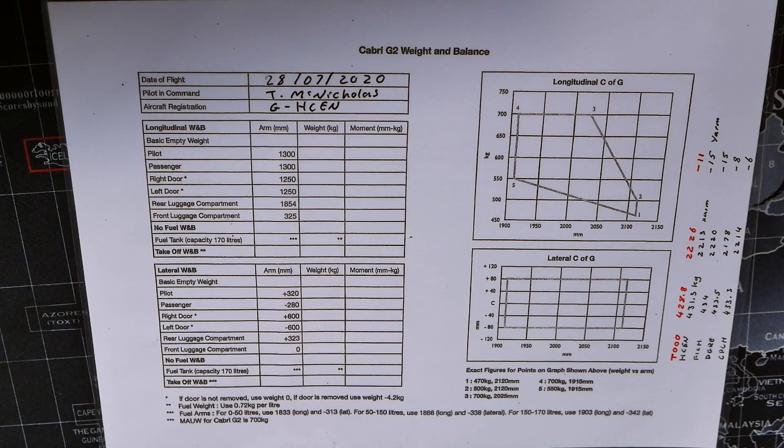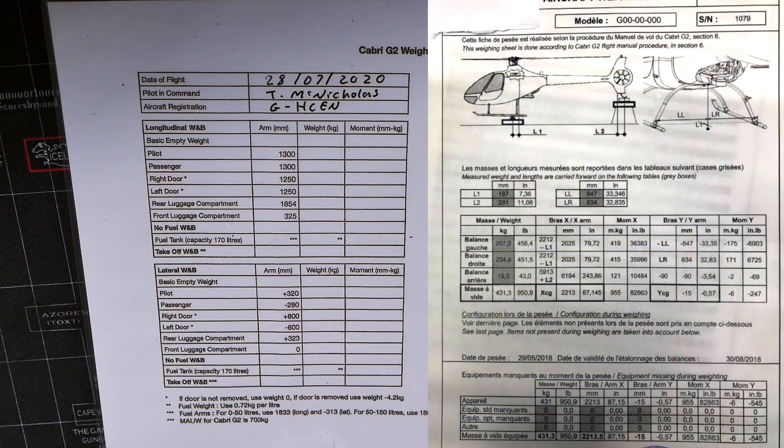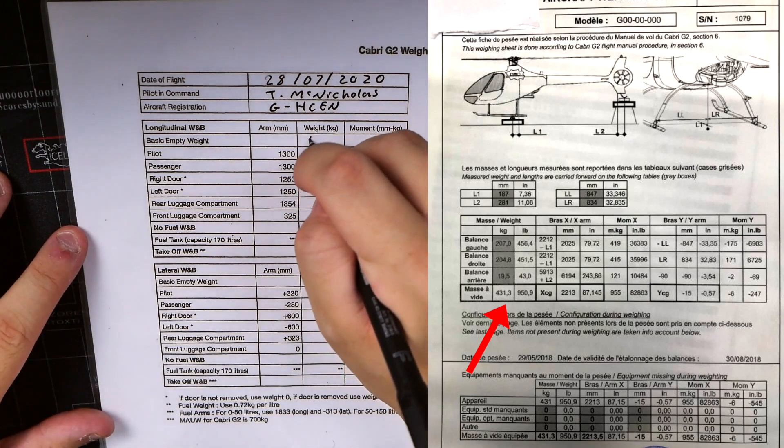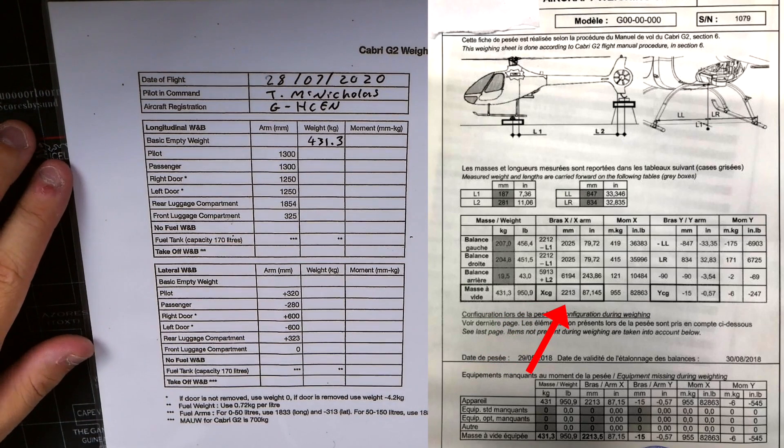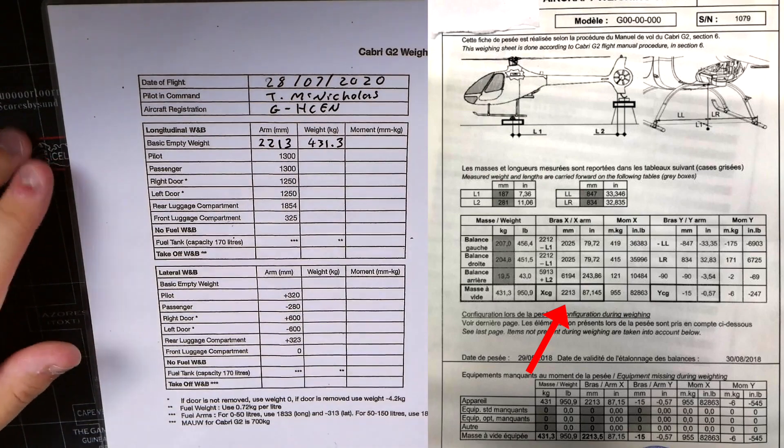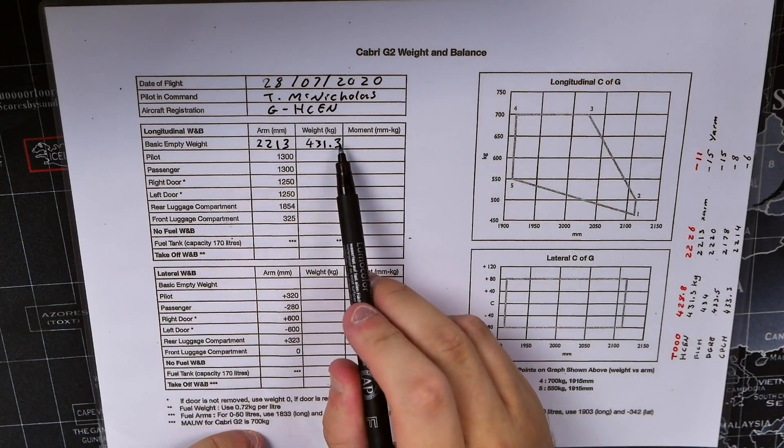One of the first bits of information you need to know is the basic empty weight of the aircraft itself. This is different for every single aircraft out there. Not every Cabri G2 helicopter weighs the same, and neither does its longitudinal or lateral arm lie in the same place. As specified by the manufacturer, we have a weight of 431.3 kilograms, so we write it in this box here, and its longitudinal arm is 2213, so we write 2213 in here.